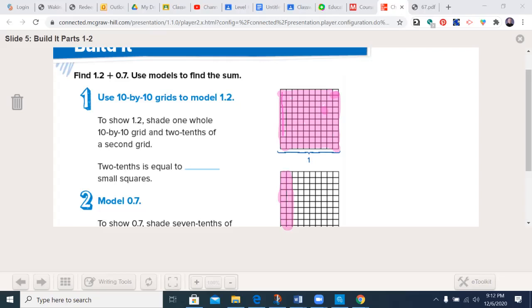Two tenths is equal to 20 small squares. So I'll write that in real quick here. Now I'm going to do 7: 1, 2, 3, 4. Remember to be careful. 5, 6, and 7.